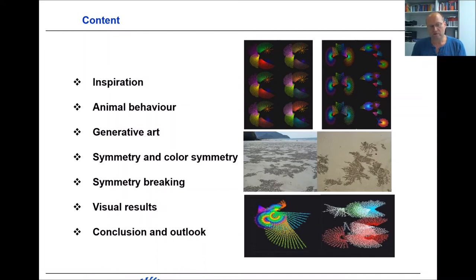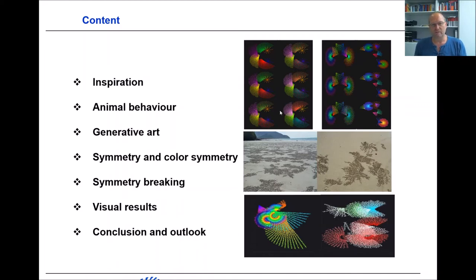In the main part of my talk I will show experiments on how symmetry and symmetry breaking can be included in a generation process — and symmetry not only means geometric symmetry but also color symmetry. Then I will show some visual results, some of which are already presented here, followed by a conclusion and some outlook.